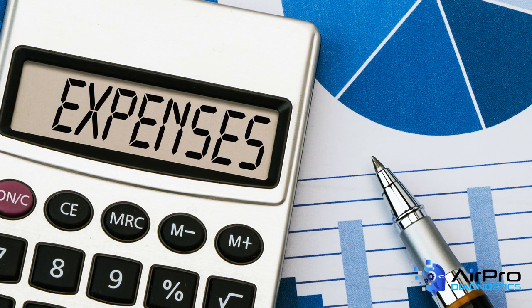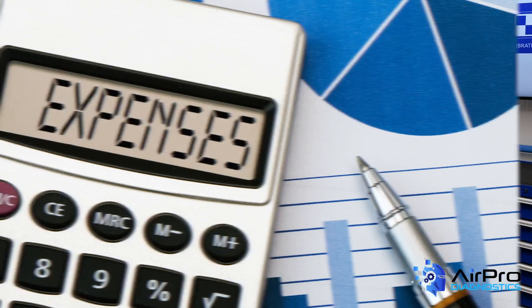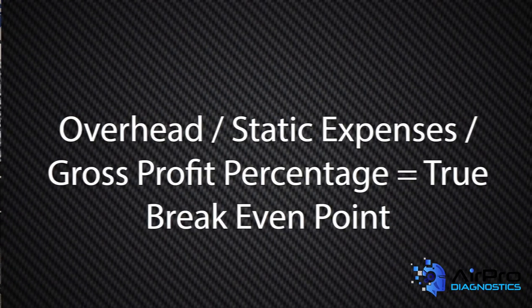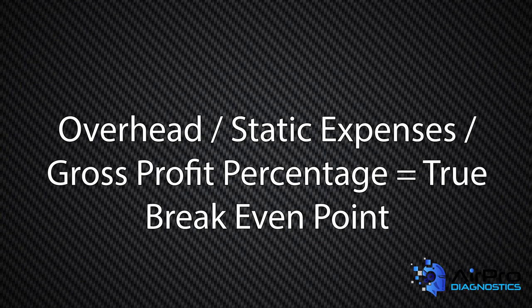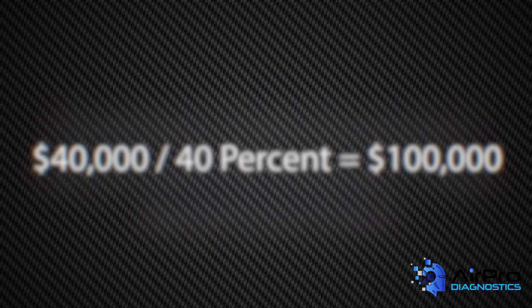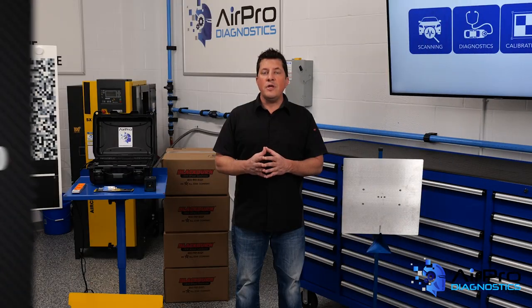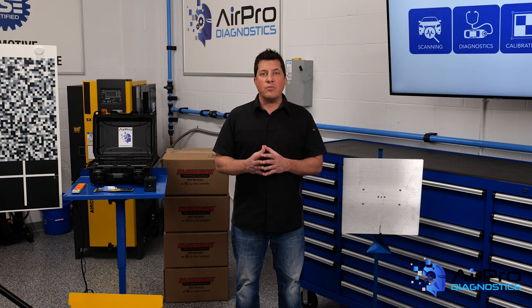As we know, the expenses of a business change, and there are other ways to look at breakeven calculations. You could start with your fixed costs and calculate what the sales need to be. Overhead divided by gross profit percentage equals true breakeven point. Or, $40,000 divided by 40% equals $100,000. When overhead expenses change, you'll need to recalculate what sales you need to breakeven.